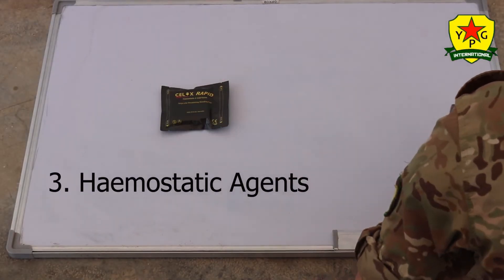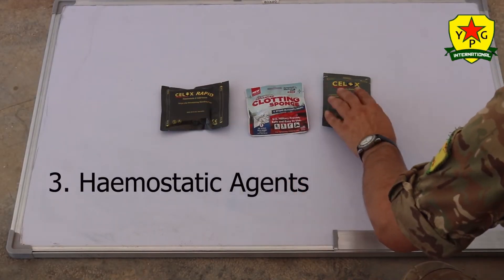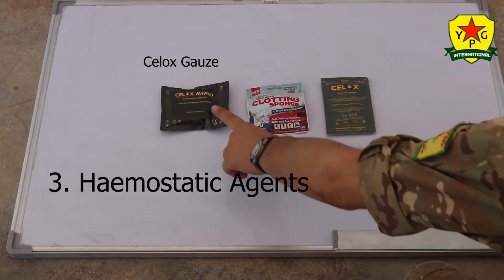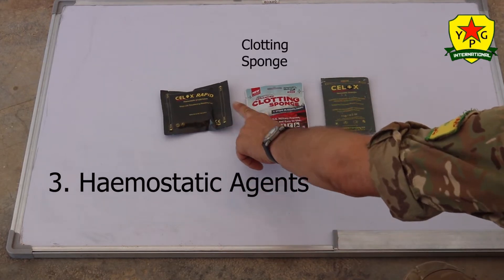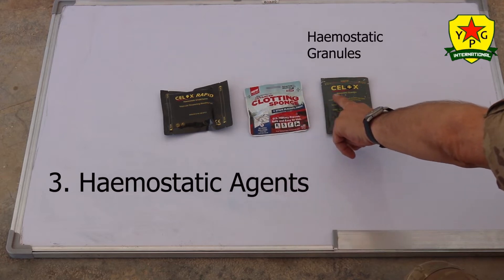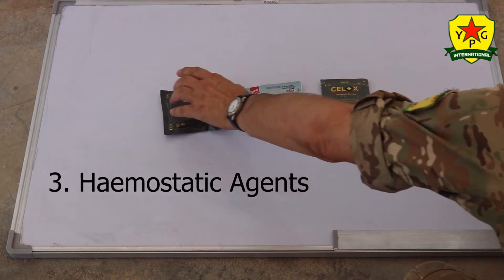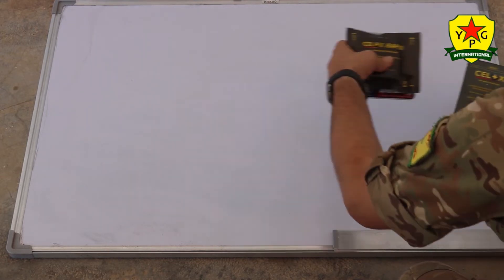Next, we have the hemostatic agents. These come in various shapes and sizes. Good ones to bring are the Celox gauze, the clotting sponge, and hemostatic granules. Celox is a good company as is North American Rescue.